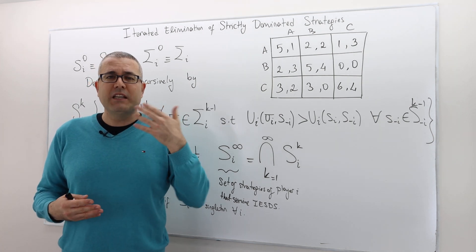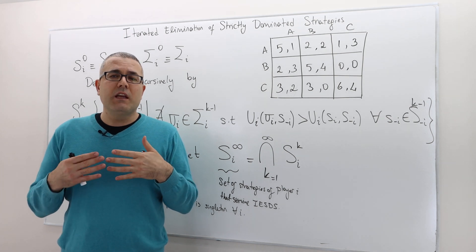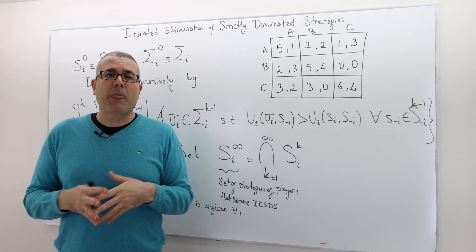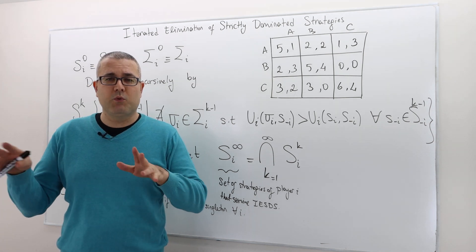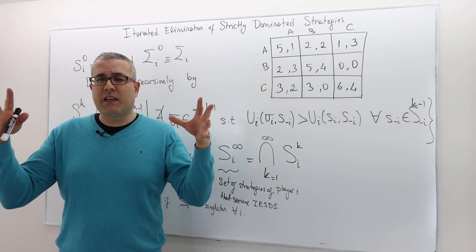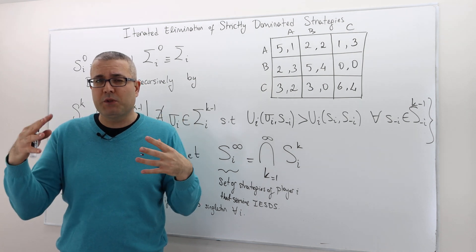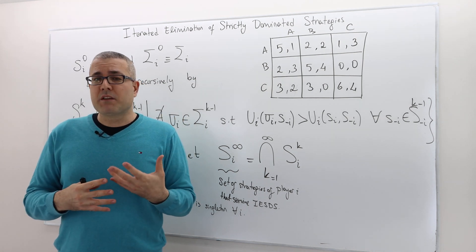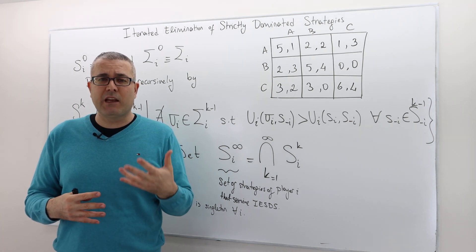So therefore, this idea of getting rid of the worst strategies can be applied to all players. Once we apply it to all players, some strategies will be dropped out of consideration. The game is going to shrink, meaning the number of strategies for each player is going to reduce. And the thing is, we can repeat this reasoning again.